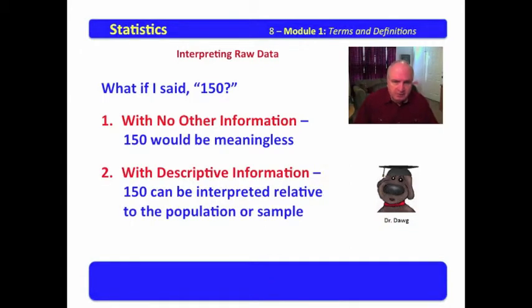With descriptive information, and by descriptive information I mean such things as the mean and the standard deviation, the score of 150 could be interpreted relative to a population or sample. Consider the following.